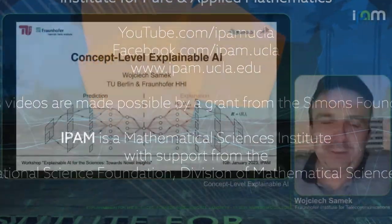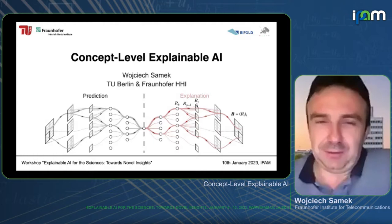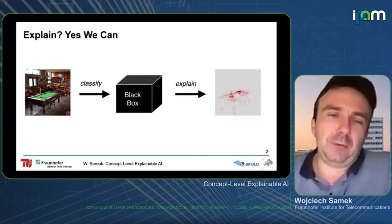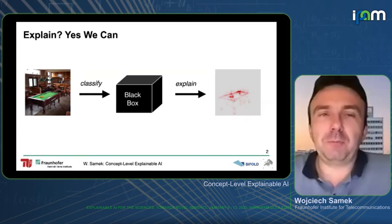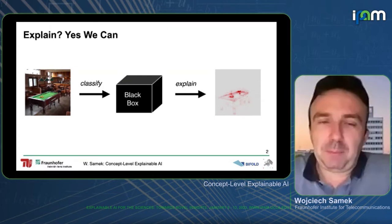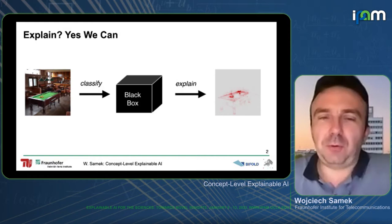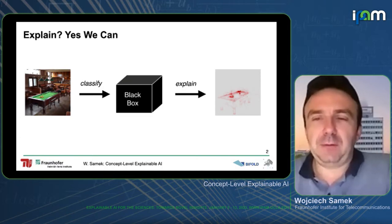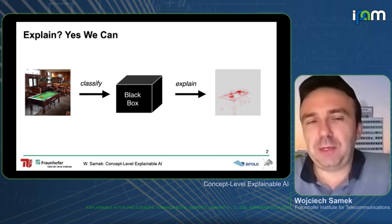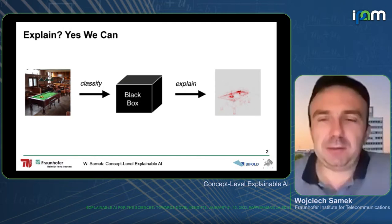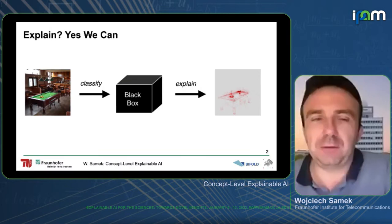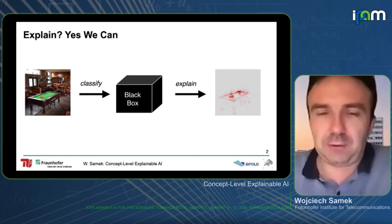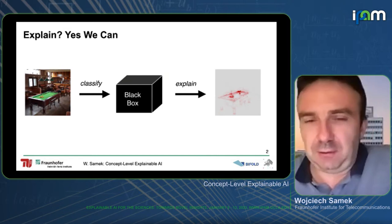I will present our recent work on concept-level explanations. When we talk about explaining predictions of neural networks, one usually thinks of attribution-based explanations: you have a black box classifier such as a deep neural network, an image of a pool table, and you get the prediction 'pool table.' We can explain this prediction by computing attribution maps showing which pixels and areas in the image are important, while the background is not.